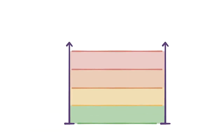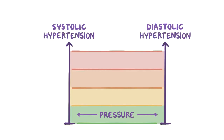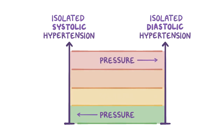Typically, both systolic and diastolic pressures tend to rise or fall together, but that's not always the case. Sometimes you can have systolic or diastolic hypertension, when one number is normal and the other is really high. This is referred to as isolated systolic hypertension or isolated diastolic hypertension.